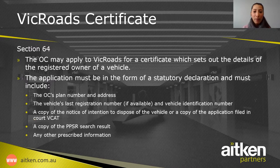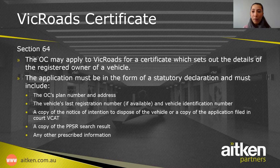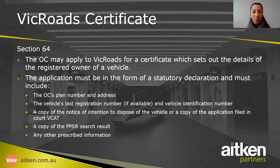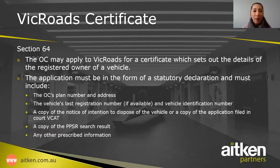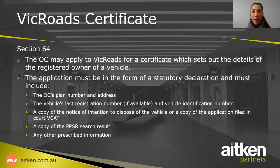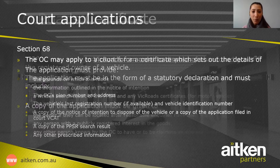The OC may apply to VicRoads for a certificate which sets out the details of the registered owner. The application must be in the form of a statutory declaration and must include the owner's corporation's details, the vehicle's registration number if available, the vehicle identification number, a copy of the notice of intention to dispose of the vehicle or a copy of the application filed in VCAT, a copy of the PPSR search result, and any other prescribed information. VicRoads will not provide that information unless the OC can show there is an abandoned vehicle and the OC has taken steps before it disposes of it.